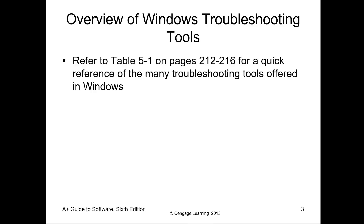The Windows troubleshooting tools are in our textbook, Chapter 5, Table 5-1. Those are the page numbers. The big thing is it's a list of Windows tools — you want to know what tools are available in Windows and what they do. But that's what we've been focusing on through Chapter 3 and Chapter 4, so you should already have a good grasp on that.